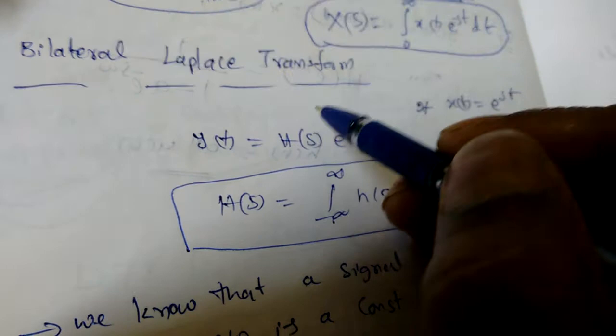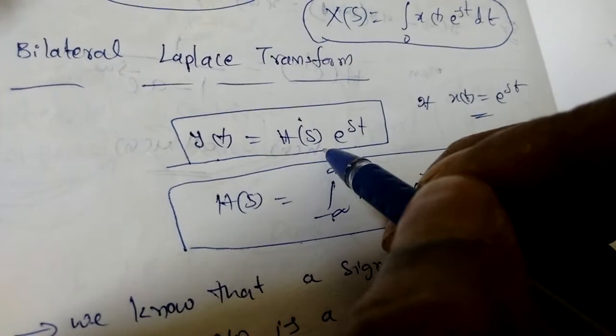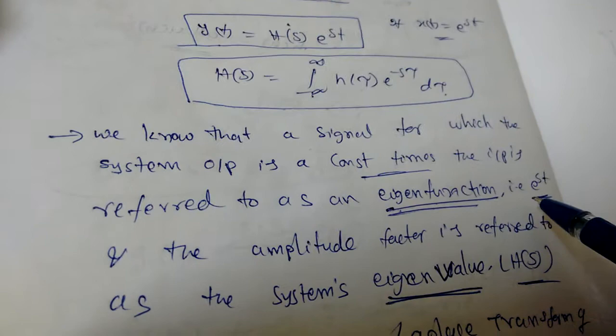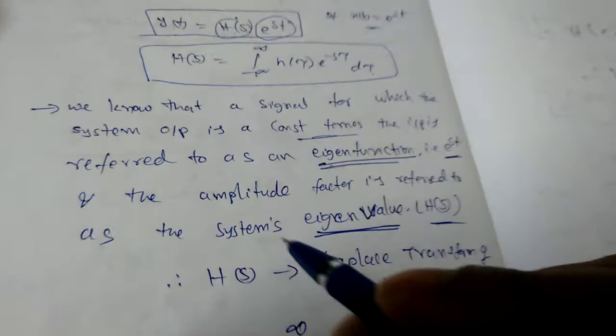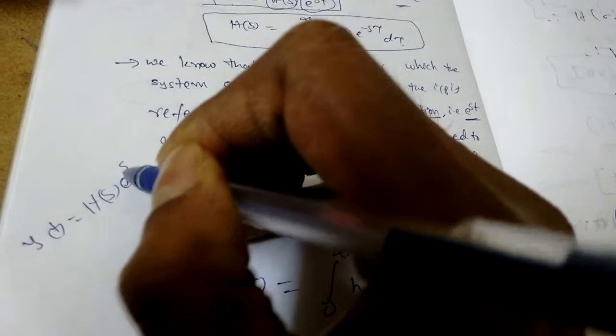Suppose the input is an exponential function. To find y(t), this will become y(t) = H(s) · e^(st). Sometimes we may get questions from this — if the input is e^(st), what is the eigen function of a given equation. We know that a signal for which the system output is a constant times the input is referred to as an eigen function, that is e^(st). The amplitude factor is referred to as the system eigen value. So e^(st) is the eigen function and H(s) is the eigen value. H(s) is the Laplace transform of the impulse response h(t).